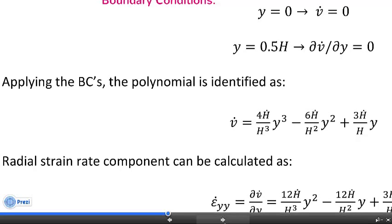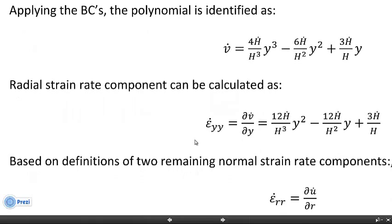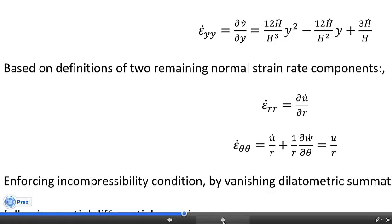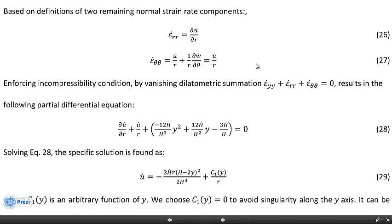The first strain rate component is the vertical normal strain rate, which by definition is the partial derivative of v-dot with respect to the y coordinate — and that is fully known. The next component is the radial normal strain rate, which requires knowing u-dot. If we know u-dot we can also work out the third normal strain rate component in the tangential direction.